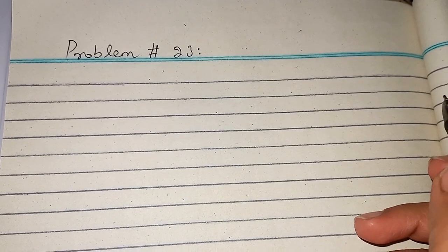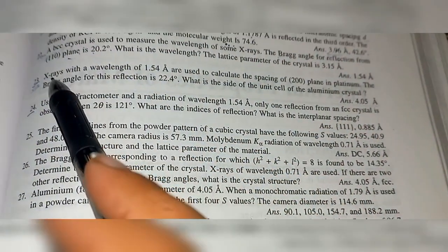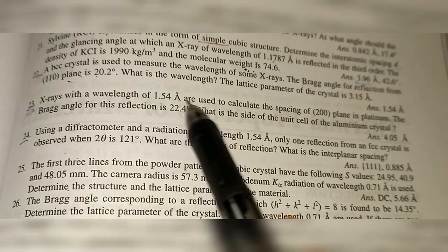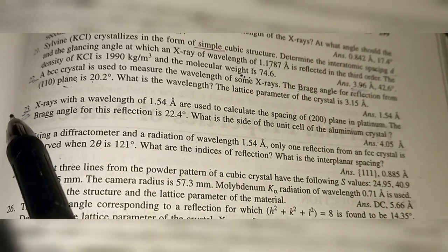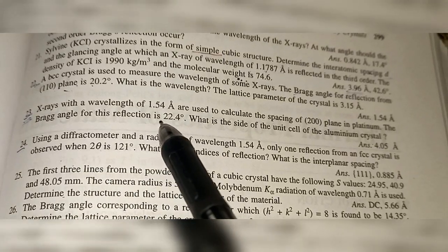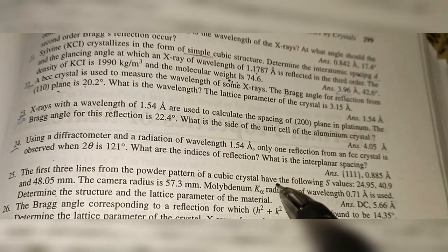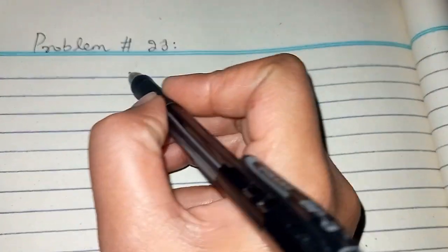Hello everyone, I hope you're doing well. We are going to solve Problem 23 from Solid State Physics by M.A. Wahab. Here is the statement: X-rays with a wavelength of 1.54 Angstrom are used to calculate the spacing of 200 plane in platinum. The Bragg angle for this reflection is 22.4 degrees. What is the side of the unit cell of the aluminum crystal?